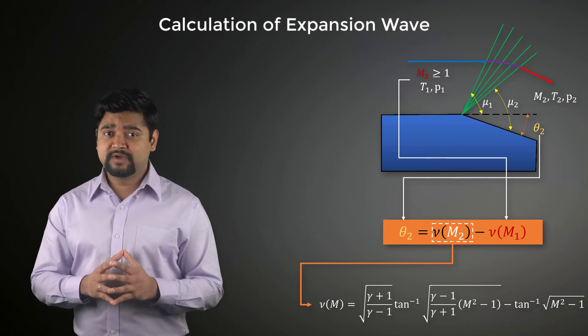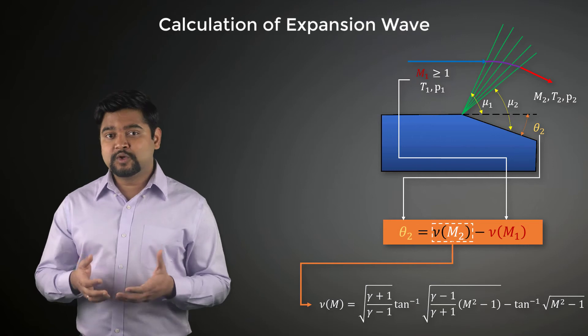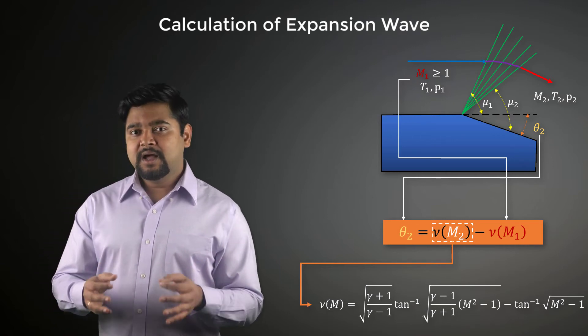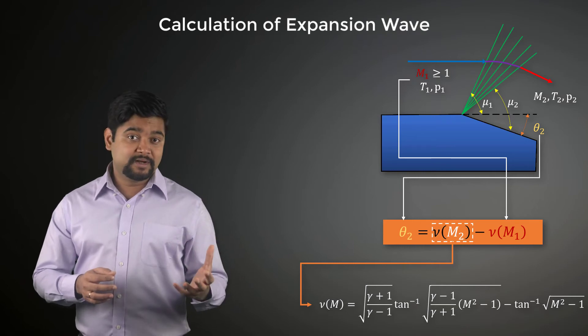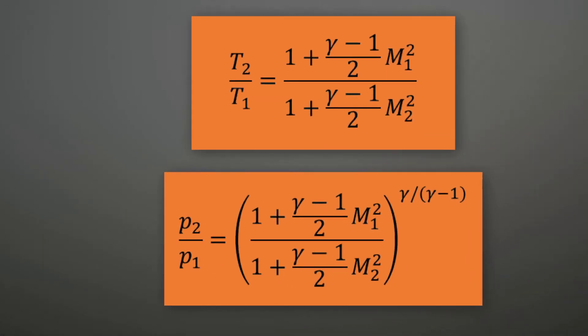Since the expansion wave is assumed to be isentropic, the total pressure and the total temperature are conserved across the expansion. And thus, we can calculate their static values downstream of the expansion using these relations.